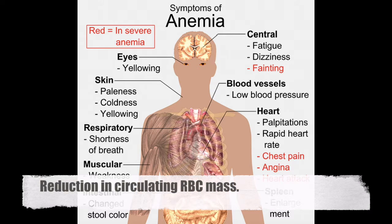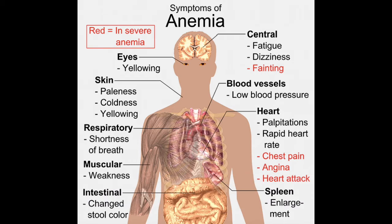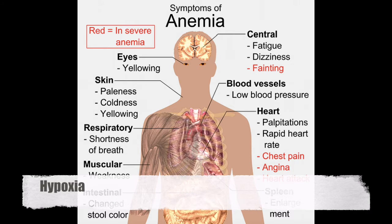Anemia is defined as a reduction in circulating red blood cell mass. Red blood cells carry the vast majority of oxygen within the blood — in particular, the hemoglobin within the red blood cell carries the vast majority of oxygen. Therefore, if patients have a reduction in red blood cell mass, they're going to present with signs and symptoms of hypoxia.